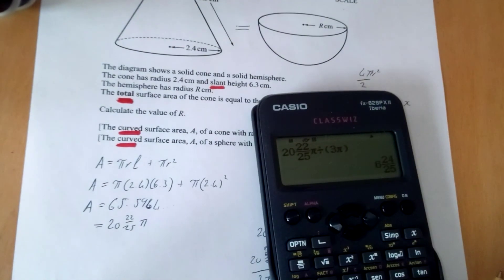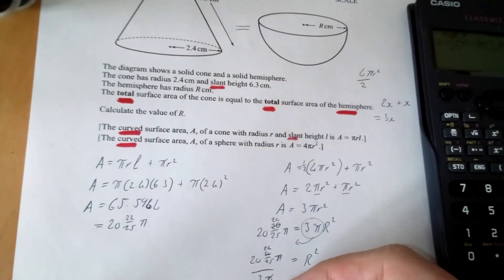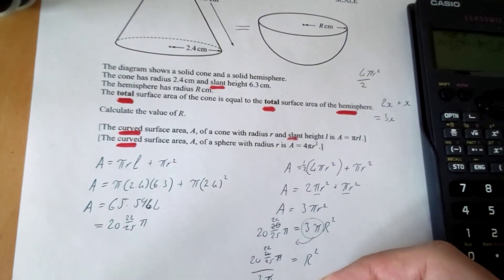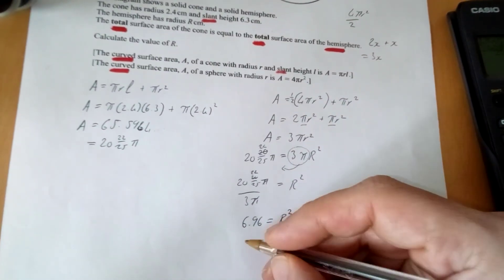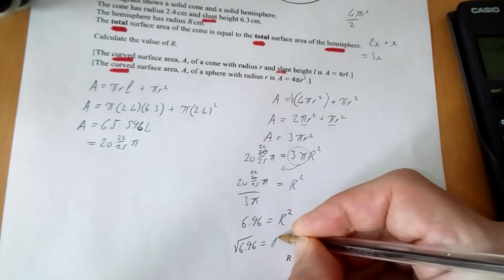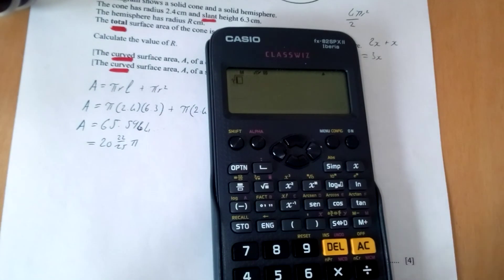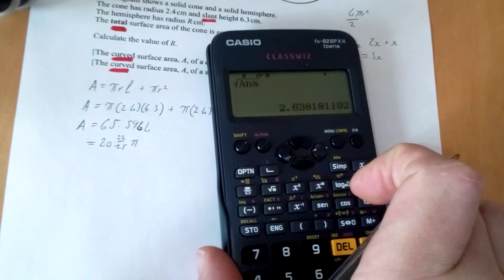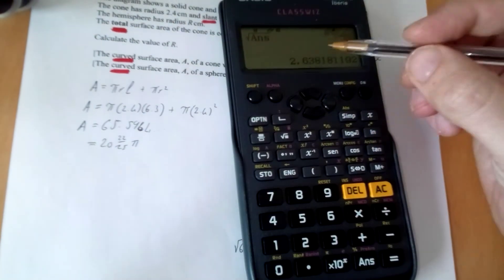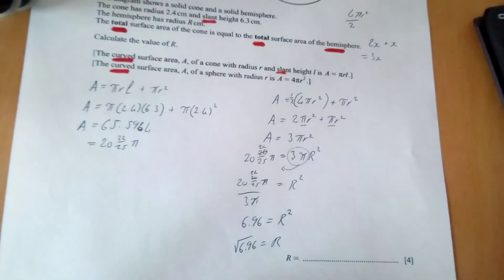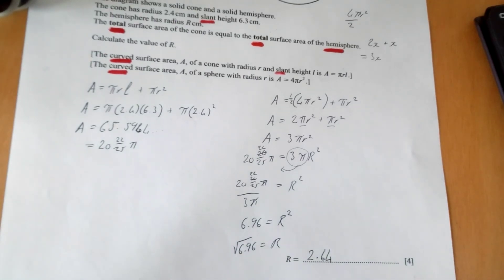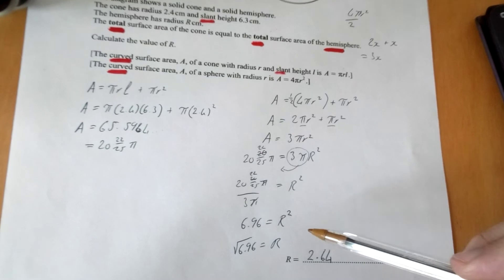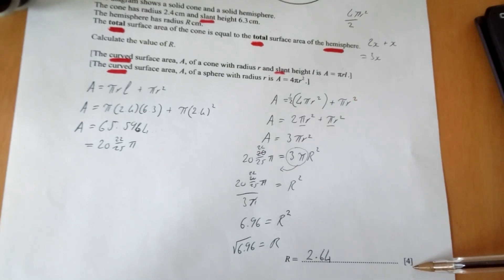Now substitute in. We already worked out the total surface area of the cone: it's 20 and 22/25 π, or approximately 65.5964. The two total surface areas are equal, so we set this equal to 3πR², where R is the unknown radius of the hemisphere. We need to isolate R, so divide both sides by 3π.